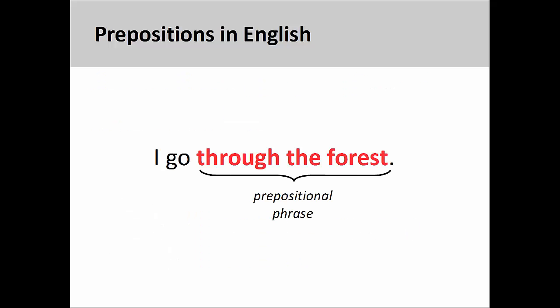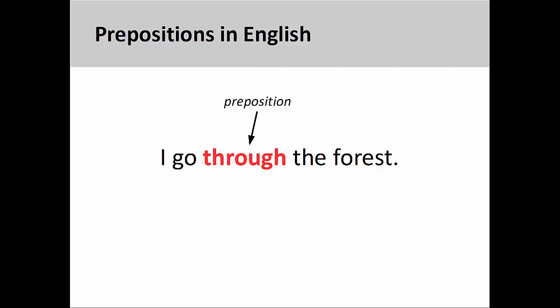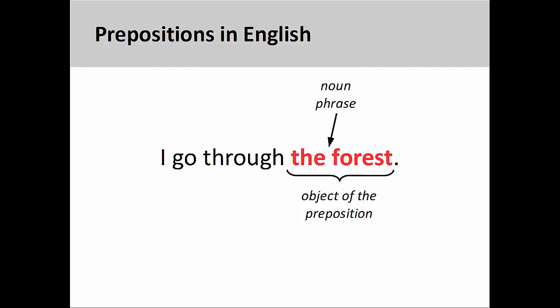In English, a prepositional phrase is a group of words that functions either as an adjective or an adverb in a sentence. It could modify either a noun or a verb. At its most basic level, a prepositional phrase consists of a preposition and the object of the preposition. Here, the object of the preposition is a simple noun phrase — the forest — although the object could contain other modifiers.